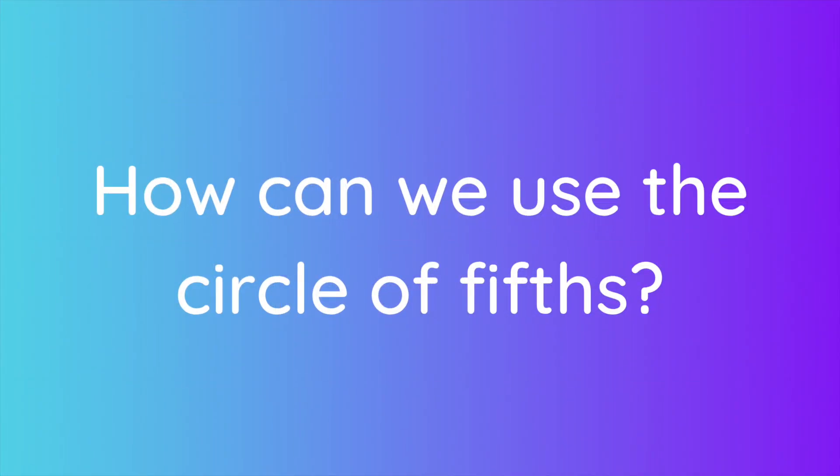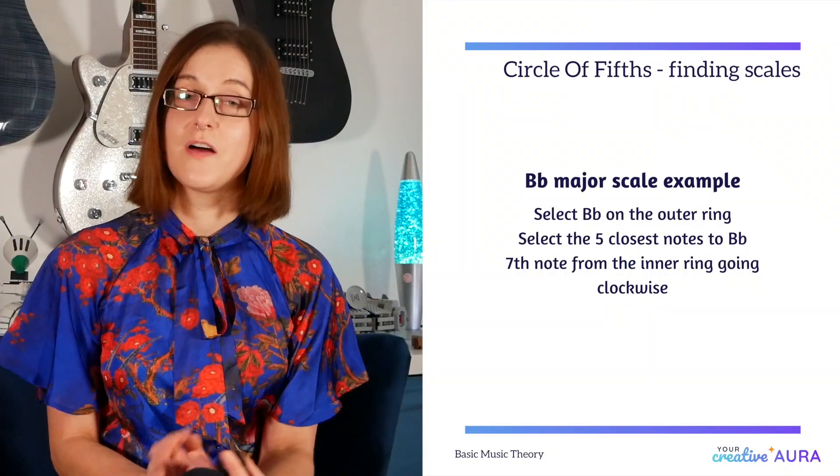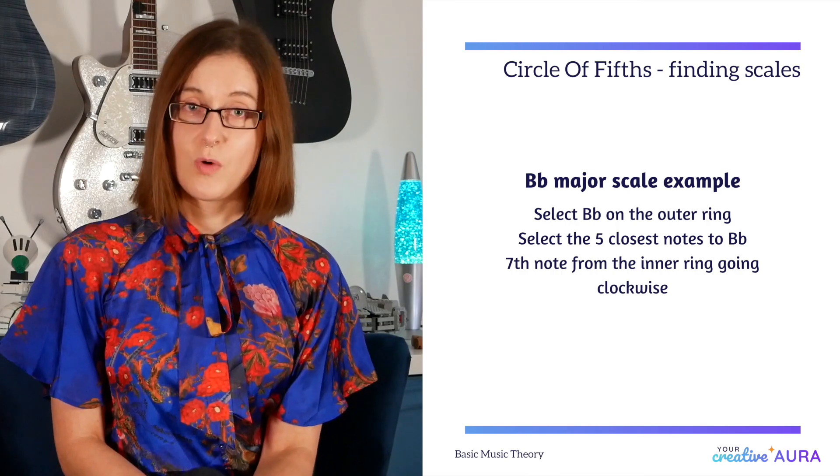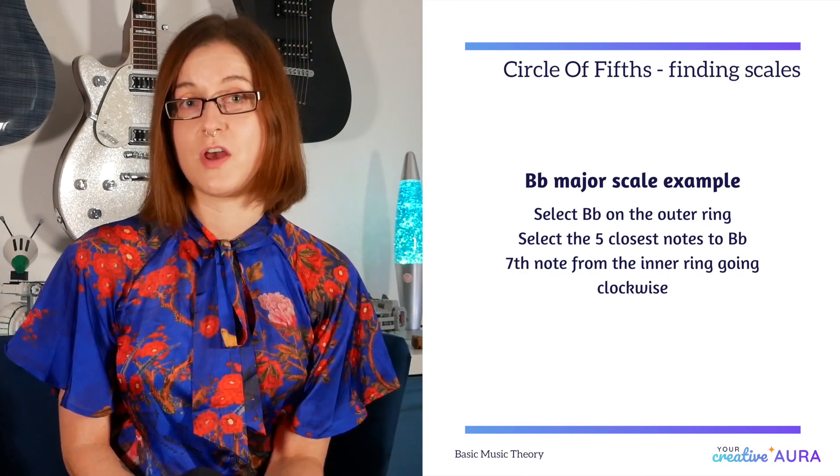So what else can we use for the circle of fifths? Firstly we can use it to find scales. It's also useful to tell you about the key you've chosen as well, as we can work out the notes very easily. So if we start on the outer ring to find a major scale, and we start on the inner ring to find a minor scale. So let's choose the key of B flat in a major scale. Therefore we start on the outer ring. This is what we do: we select the five closest notes.